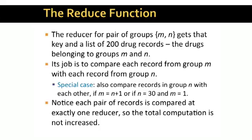As a result, each pair of drugs is compared at exactly one reducer. The total computation cost doing the comparisons is thus the same as it was when the reducer was responsible for only one pair. There might be a small amount of overhead as the reduce function organizes the 200 records and moves its attention from one pair to another.